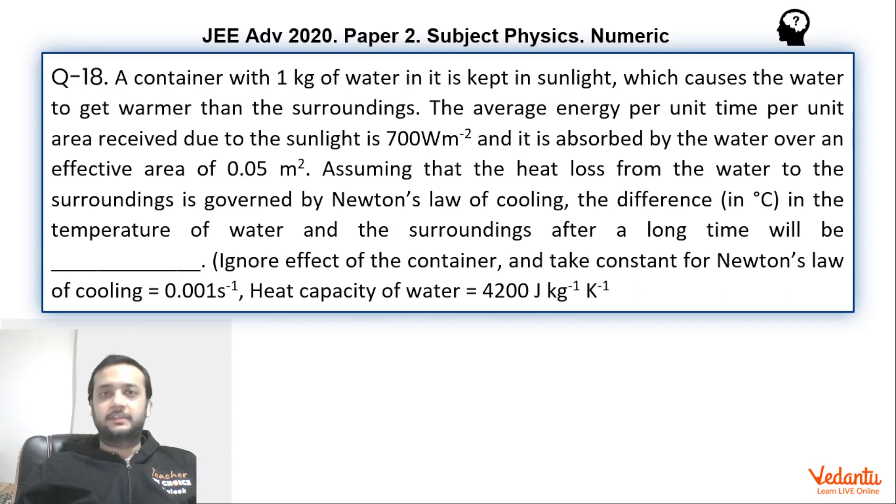Also I'm going to tell you one interesting point in this. So basically it is a container which has 1 kg of water. Sunlight is falling on that water because of which the temperature of the water is slightly more than the surrounding temperature. The area of the water on which sunlight falls is given as 0.05 meter squared and the intensity of the sunlight is 700 watt per meter squared. The water is losing heat because the loss of heat follows Newton's law of cooling. So we have to find the constant temperature difference between the water and the surrounding, that means the steady state temperature difference. The Newton's constant has been given as 0.001 per second. Heat capacity of the water has been given as 4200 joules per kg per Kelvin.